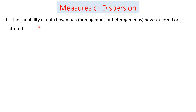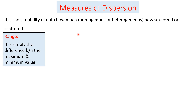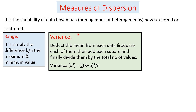Moving to measures of dispersion: measures of dispersion indicate the variability of our data — how homogeneous or heterogeneous, how squeezed or scattered our data is. It is divided into range, variance, and standard deviation. Range is simply the difference between the maximum and minimum values. Variance is calculated by subtracting the mean from each value, squaring the result, summing those squared values, and dividing by the total number of values.